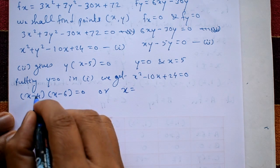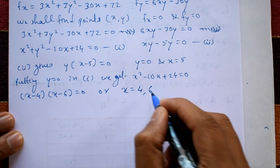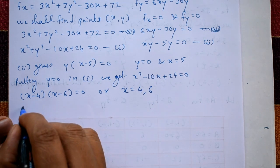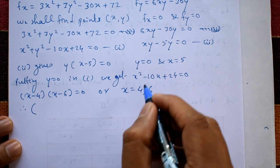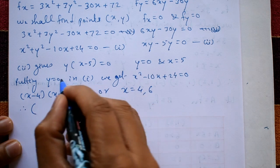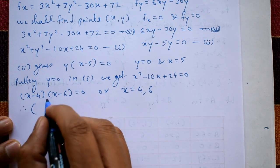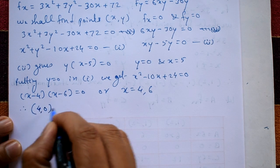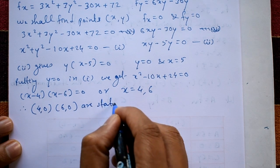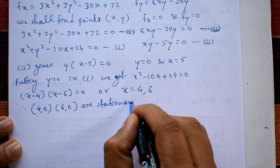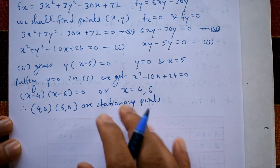So x = 4 or x = 6. Therefore the stationary points when y = 0 are (4, 0) and (6, 0).